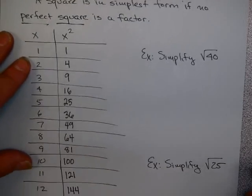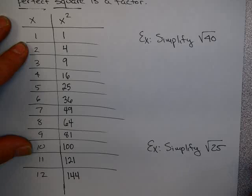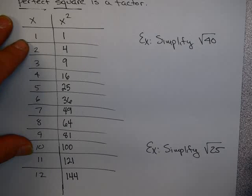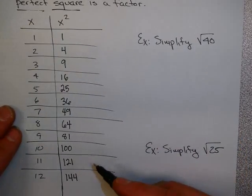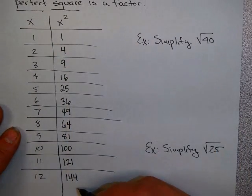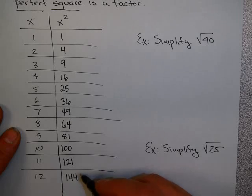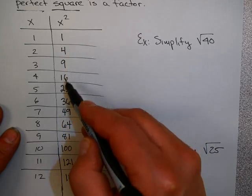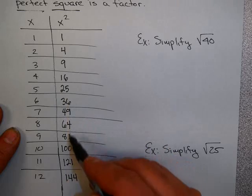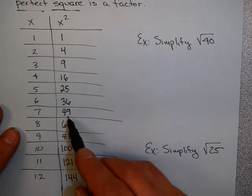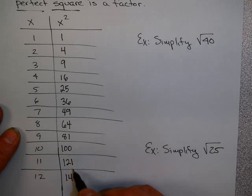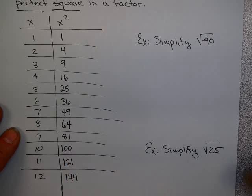When I was a kid, I had to memorize this list up to the number 25. Now I don't know that that's necessary for you. This is probably an adequate list. But this is useful to have in front of you when you're working some of these problems. These numbers here are called perfect squares. So the numbers 1, 4, 9, 16, 25, 36, 49, 64, 81, 100, 121, 144 are examples of perfect squares.